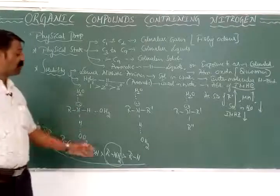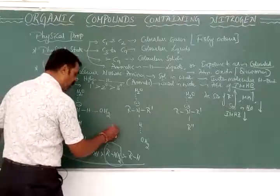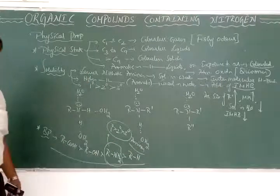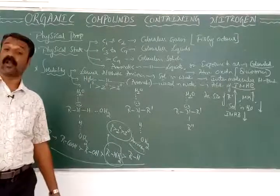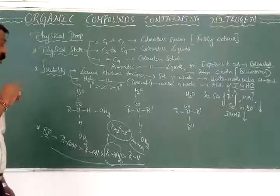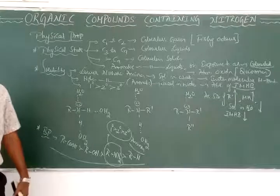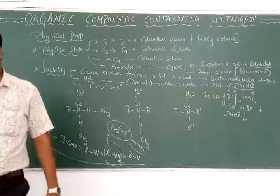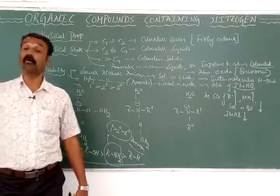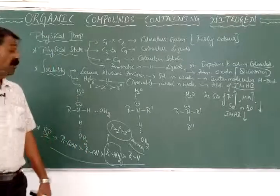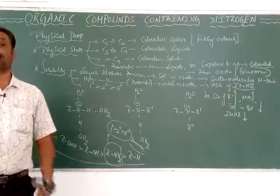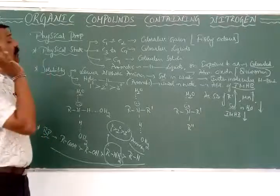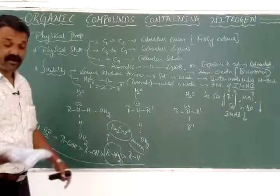Primary amines have greater boiling points than secondary, which are greater than tertiary. Primary amines can have three intermolecular hydrogen bonds (two N-H bonds plus the lone pair), secondary amines have two, and tertiary amines have one. More intermolecular hydrogen bonding means a higher boiling point. Also, as the size of the alkyl group increases, the boiling point also increases because molecular mass increases.